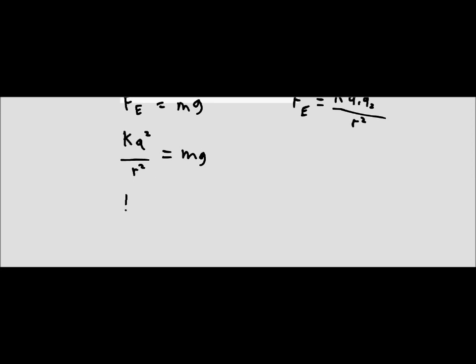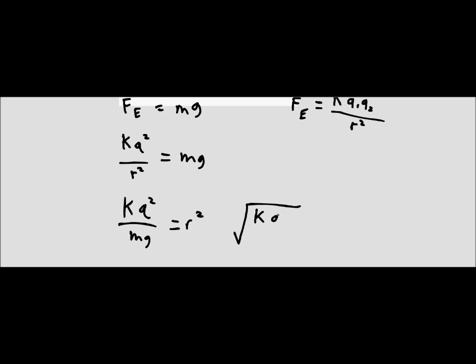So we're going to cross multiply. So we've got K Q squared over mg is equal to r squared. And then for our working equation, we're just going to square root everything. So we end up with the square root of K Q squared over mg is equal to r.